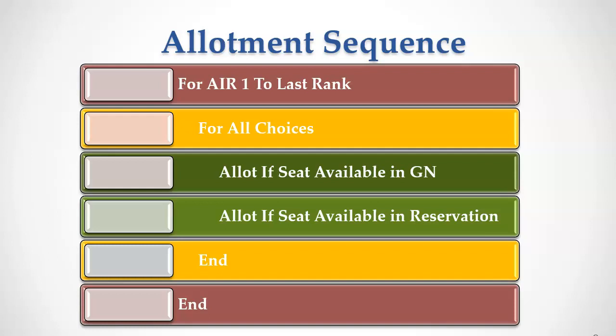If it could not find a seat in any of the college choices, then it moves to the candidate with the next highest rank — say All India rank 2. It checks if there are seats as specified in the college preference order. If it finds a seat, it allots that and moves to the next highest rank student, say All India rank 3. This process repeats till all the seats are allotted or till the applied candidate list exhausts.